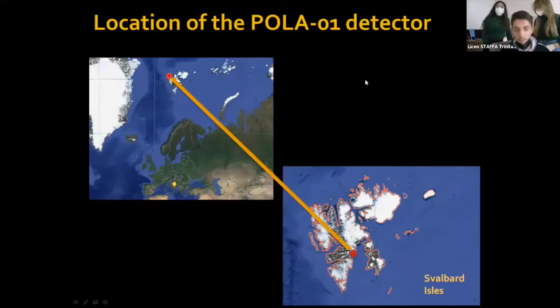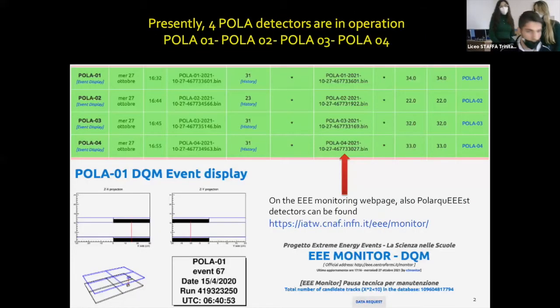Here we can see the position of the Polar-01 detector, which is located in the Svalbard Archipelago in Norway, in the North Pole. If we visit the EEE monitor web page, where we can see the monitors of all the EEE telescopes, we notice that there are currently four detectors similar to the one we have analyzed: Polar-01, 02, 03, and 04.